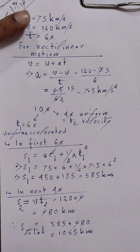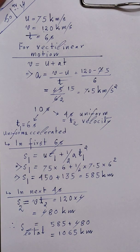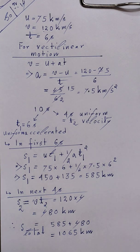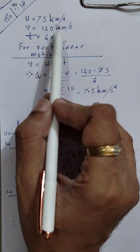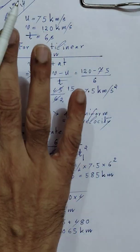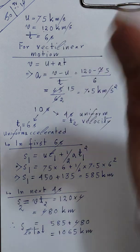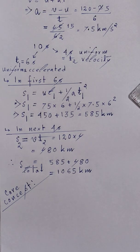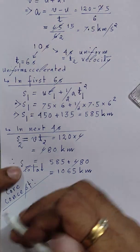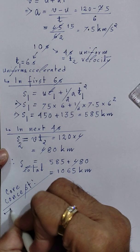The core concept is that the spacecraft accelerates for the first 6 seconds only, when the rocket motors were on. After 6 seconds it acquired a final velocity of 120 km/s and continued with that velocity for the next 4 seconds.